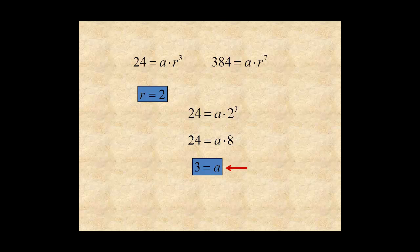So the explicit equation for the sequence is a sub n equals 3 times 2 to the power of n minus 1.